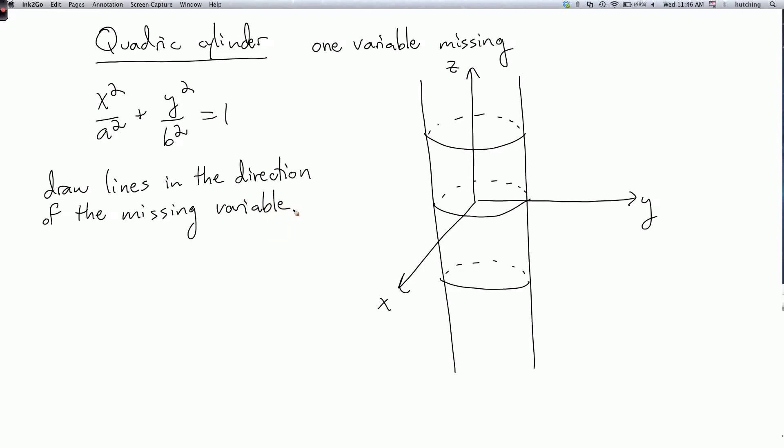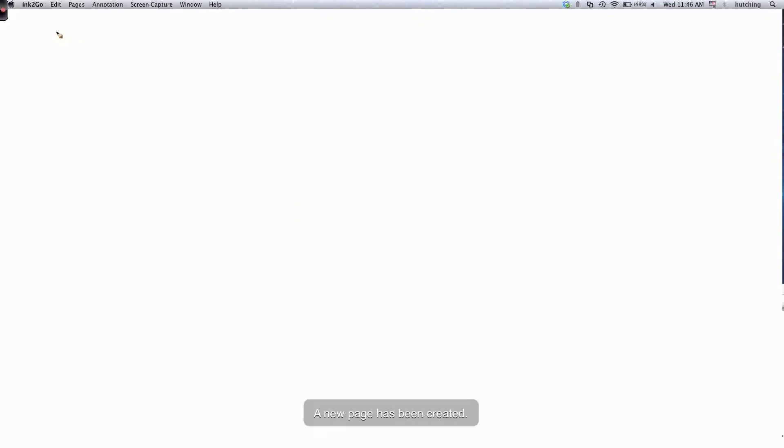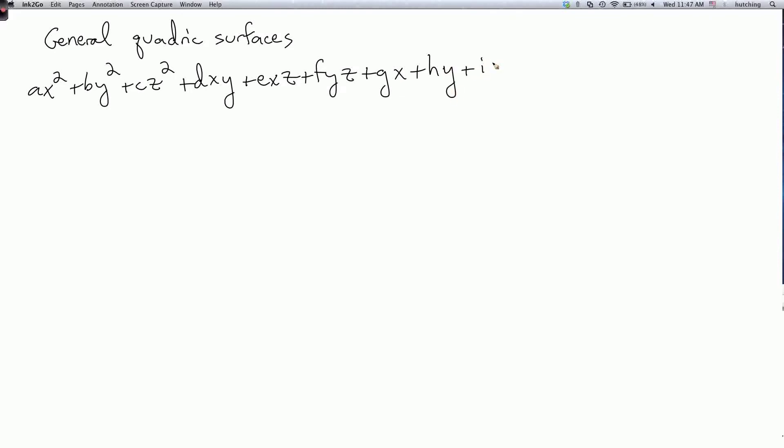Okay, now what about more general quadric surfaces? Of the form ax squared plus by squared plus cz squared plus dxy plus exz plus fyz plus gx plus hy plus iz plus j equals zero.